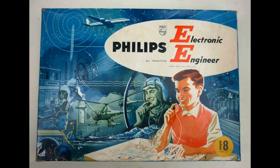The EE-8 was one of the first kits of its kind and was partnered to the A20 add-on kit that allowed for 20 different projects to be built.